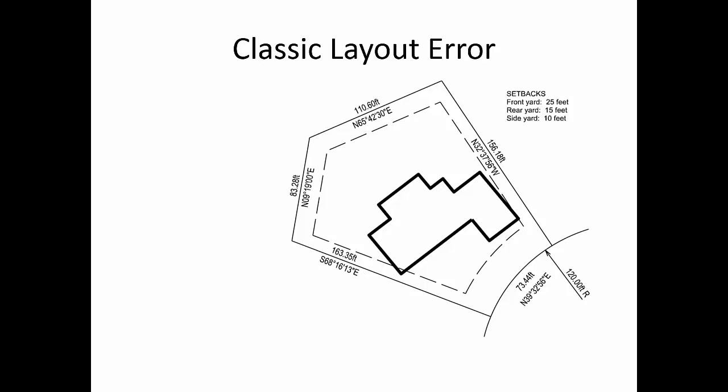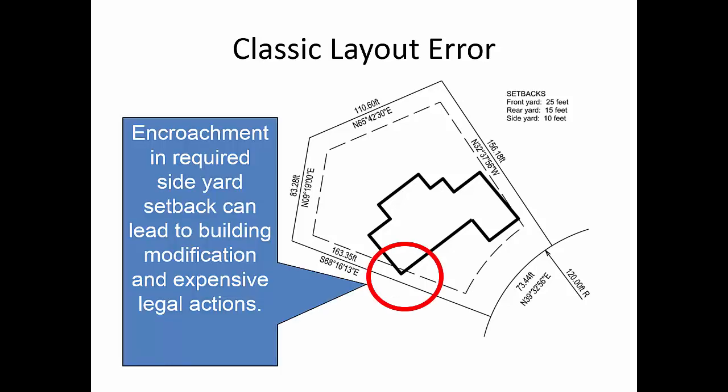Now, what's critical in this case, as we try to put this building as far forward in the lot as possible, is the side yard setback. Many contractors will avoid trying to lay this structure out themselves because of the risk of getting it wrong. You see, if they get the front corner, the one closest to the street in the right place, but they get the building rotated just a little bit, they can end up with an encroachment in the opposite side yard. This can lead to very expensive modifications to the building and, in some cases, very expensive legal actions.